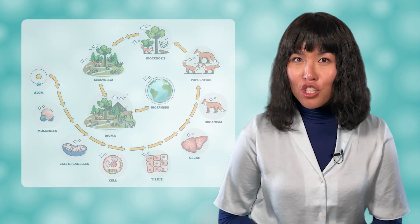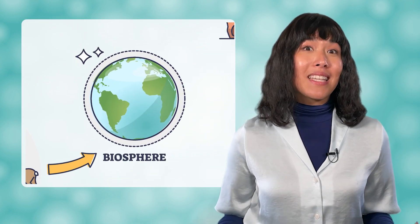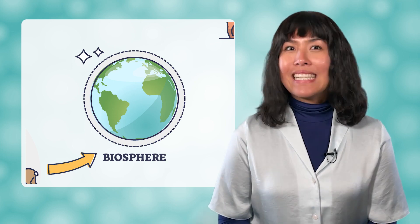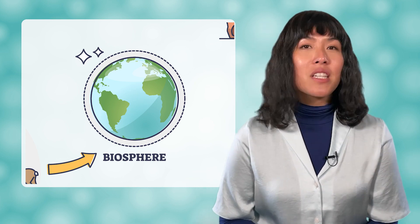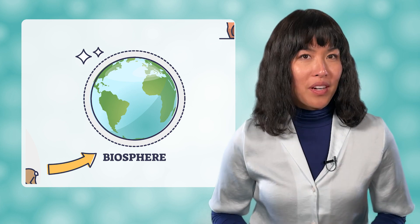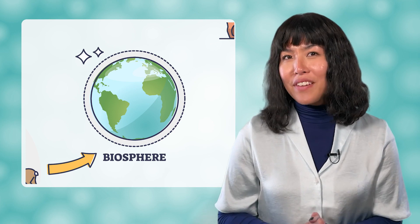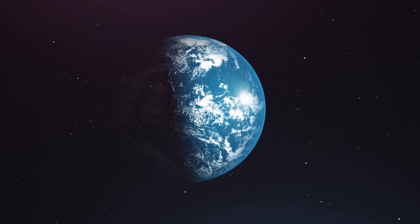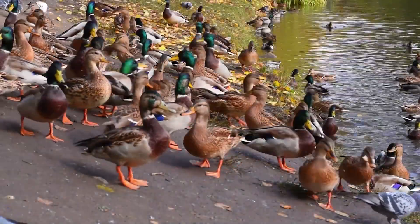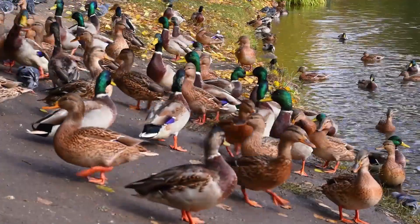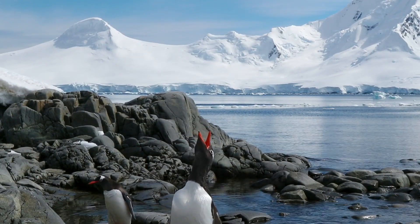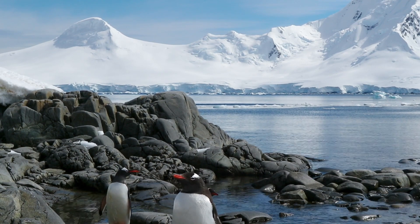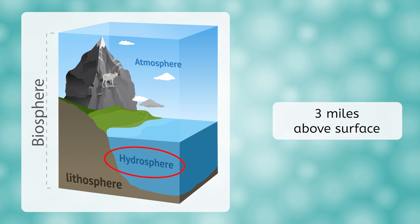The highest level of ecological organization is the biosphere. You could probably dissect this word and make a pretty good guess about what it means — 'bio' means living, and a sphere is the shape of the earth, so the biosphere simply means all the living parts of Earth, or the parts of Earth where living things exist. Most life exists within a region that begins 1,000 feet below the ocean's surface and extends to approximately 3 miles above the surface.